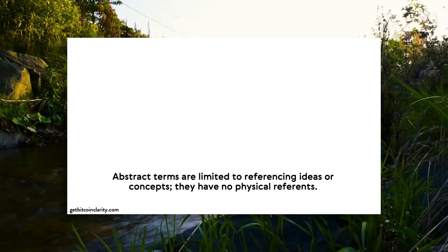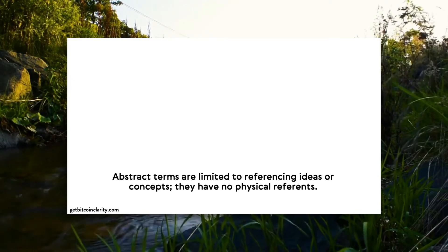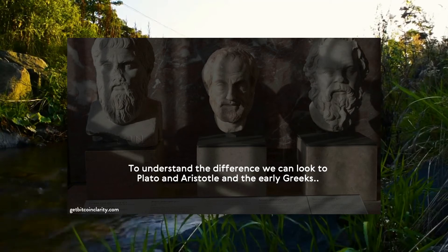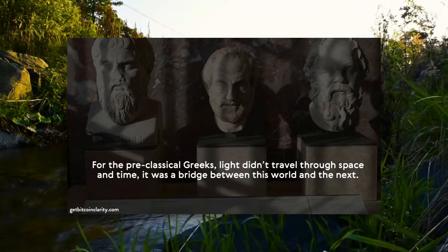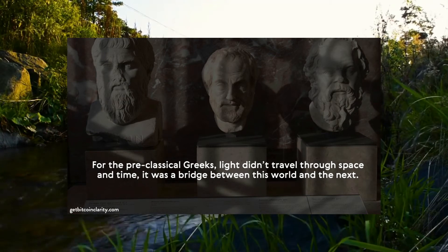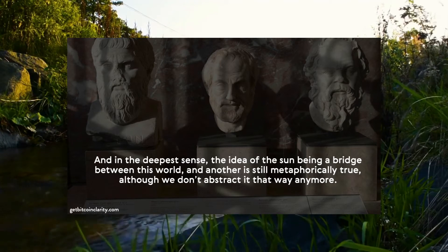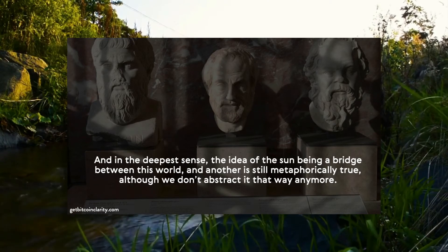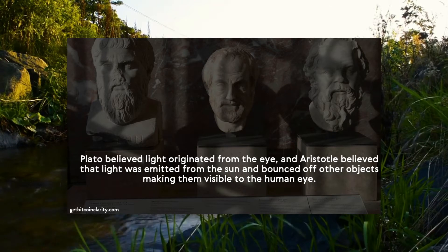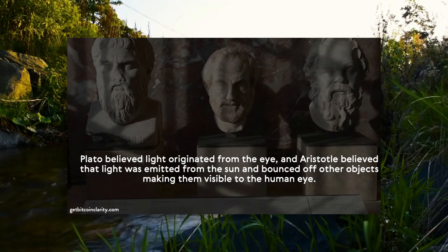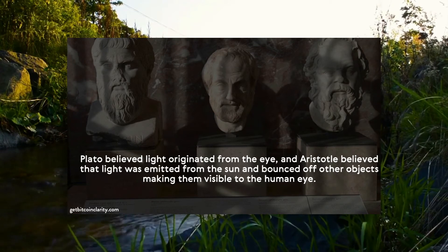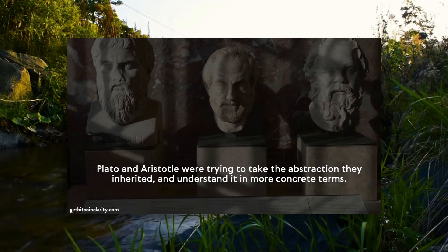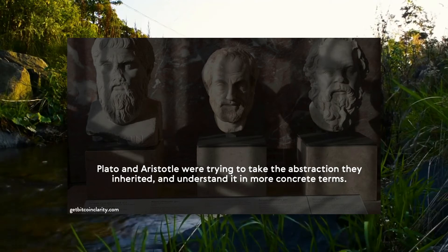Language may be our most powerful tool. Concrete terms refer to objects or events available to the senses, whereas abstract terms are limited to referencing ideas or concepts with no physical references. To understand the difference, we can look to Plato, Aristotle, and the early Greeks. For the pre-classical Greeks, light didn't travel through space and time — it was a bridge between this world and the next. Plato believed light originated from the eye; Aristotle believed light was emitted from the sun and bounced off objects, making them visible to the human eye.